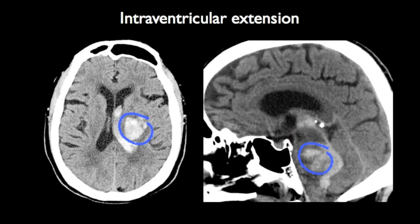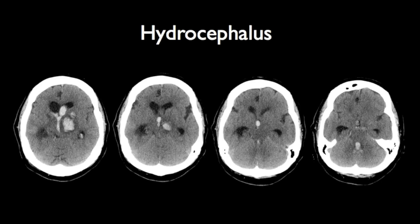When such extension occurs, it is not surprising that obstructive non-communicating hydrocephalus develops, as is seen in this case with marked prominence of the temporal horns and some early transependymal oedema. The overlying sulci are also effaced.